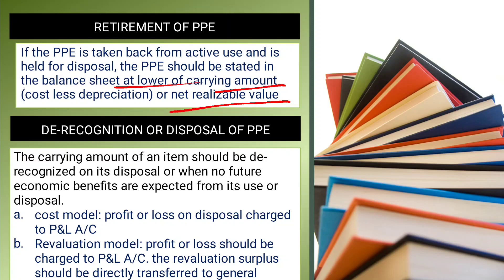There are two measurement models: the Cost Model and the Revaluation Model. If we dispose of an asset under the Cost Model, the gain or loss is recognized in Profit and Loss. Under the Revaluation Model as well, gains or losses go to Profit and Loss, and any remaining revaluation surplus can be transferred to General Reserve.